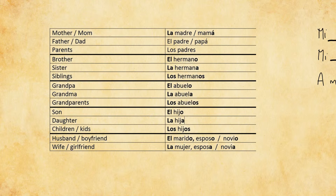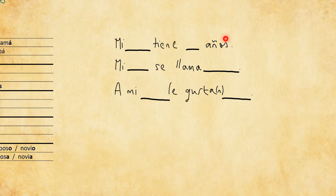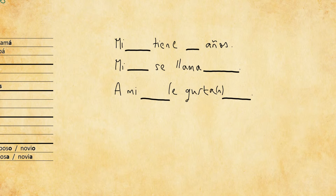Now that we've got the vocabulary covered, we can take a look at actual sentences. These are similar to the sentences we've covered about yourself in previous videos — one will be about a person's age, one about their name, and one about the things they like. You'll notice all of these verbs are in the third person because we're going to be talking about 'he' or 'she' — someone from your family.